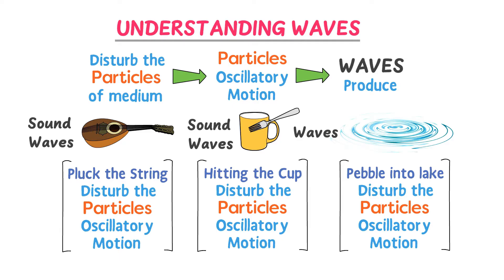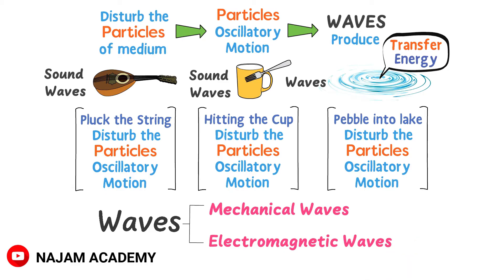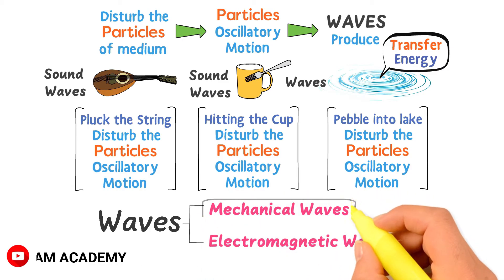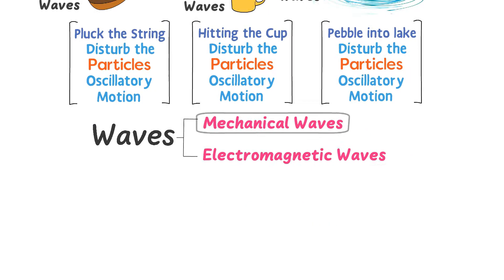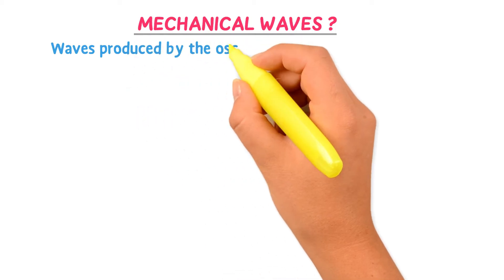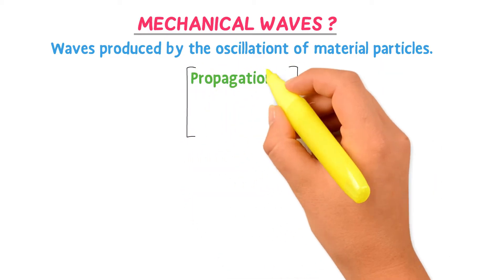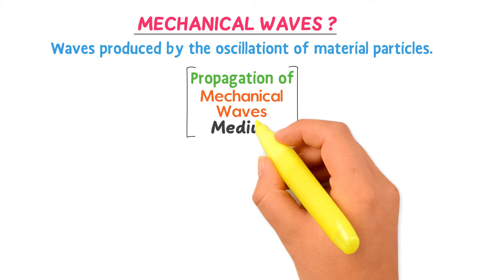Remember that waves transfer energy from one place to another without transferring the particles of the medium. There are two types of waves: mechanical waves and electromagnetic waves. In this video we will focus on mechanical waves. Waves produced by the oscillation of material particles are called mechanical waves.